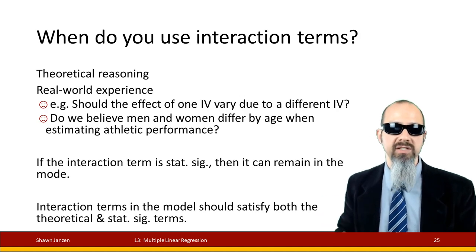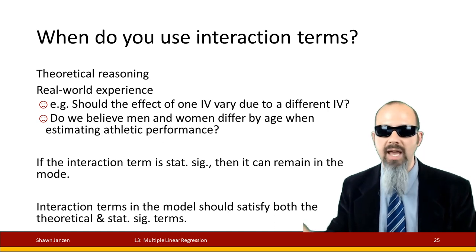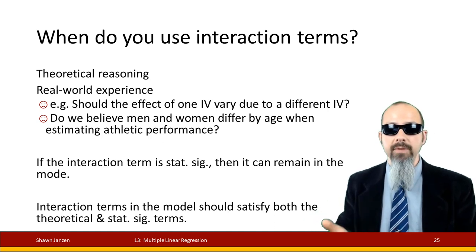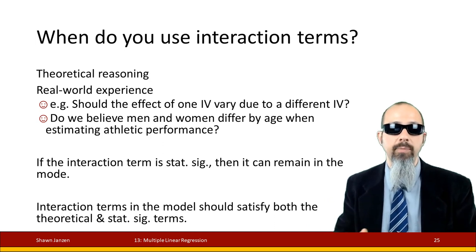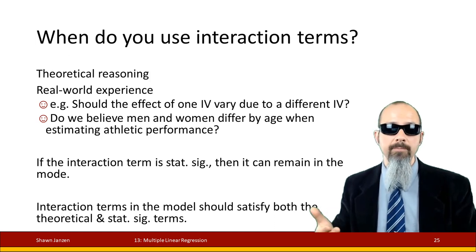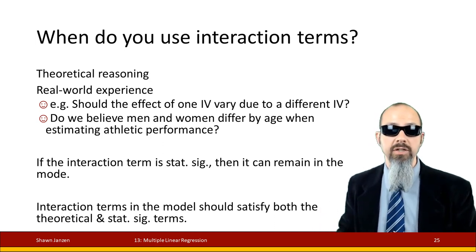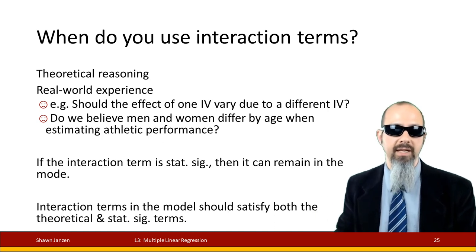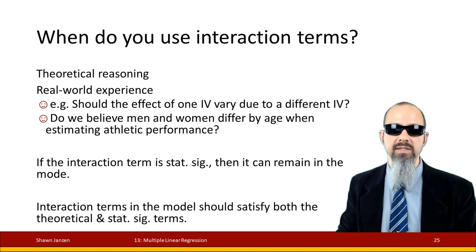When should you use interaction terms? First, fall back on theoretical reasoning — why would you do this in the first place? Yes, you can interact everything, but every interaction takes up more degrees of freedom and will push down your R-squared. You should have a real-world reason: should there be a reason one value differs from another? For example, do men and women differ in how athletic performance changes with age? If the interaction terms are statistically significant, keep them in the model. If not, pull them out — they're not adding any real contribution. Interaction terms should satisfy both theoretical and statistical significance.